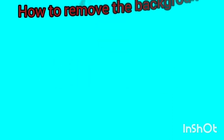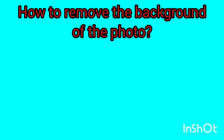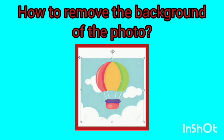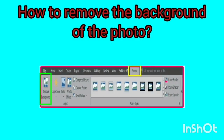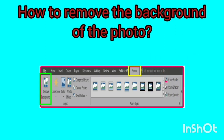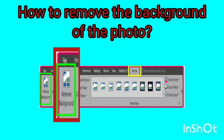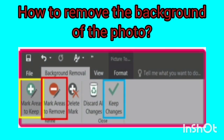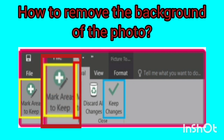Now we want to learn how to remove the background of the photo. Click once on the desired photo to select it. Then by selecting the image, the Format tab will be shown automatically, which I marked with a yellow box. Click on the Remove Background icon marked with a green box. By clicking on the 'Mark Area to Keep' option marked with a yellow box, you can draw lines to keep the areas you want in the image.